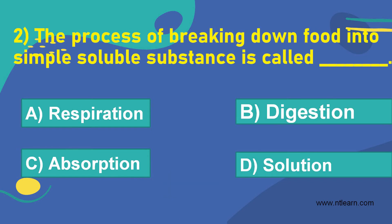Let's move on to the next question. The process of breaking down food into simple soluble substances is called dash. Option A, respiration. Option B, digestion. Option C, absorption. Option D, solution.